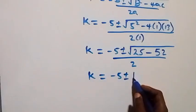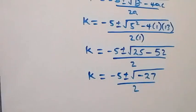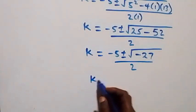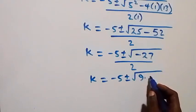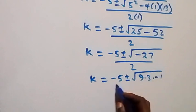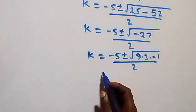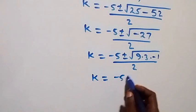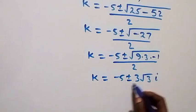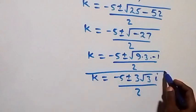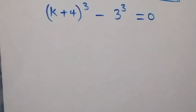This gives k equals minus 5 plus or minus square root of minus 27 over 2. We can write root of minus 27 as 3i root 3, so k equals minus 5 plus or minus 3i root 3, over 2. These are two complex solutions from Case 1.